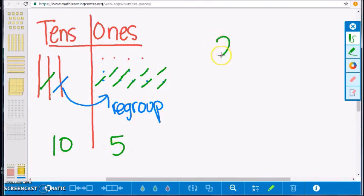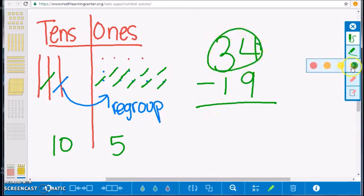Next, I will demonstrate how to complete this problem using an algorithm. The algorithm on the screen is 34 minus 19. To solve the algorithm, we will use a number bond to break apart the number 34 into 30 and 4. This allows the learner to see that the number 3 is not just 3 but 30 and 4.